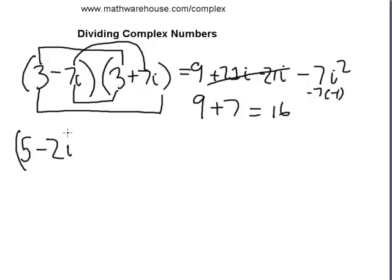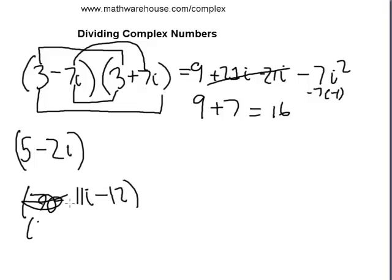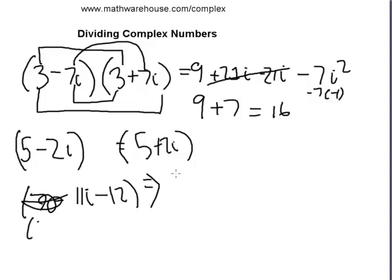Let's try a couple more. What are the complex conjugates of 5 minus 2i and 11i minus 12? The complex conjugate of 5 minus 2i is 5 plus 2i. For 11i minus 12, rewritten as negative 12 plus 11i, its complex conjugate is negative 11i minus 12 — we simply change the sign of the i term.